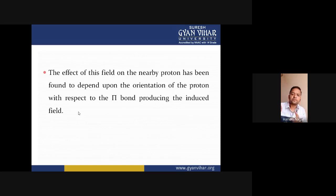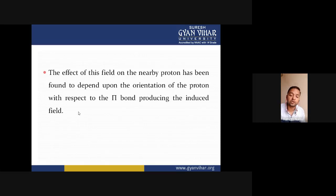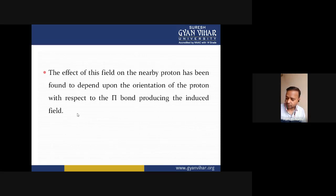In the case of alkyne, the proton is present in the direction opposite to the applied magnetic field, so the induced magnetic field shields the proton. If the proton is shielded, their signal will appear in the higher magnetic field region — meaning a higher external magnetic field is required to get the NMR signal.